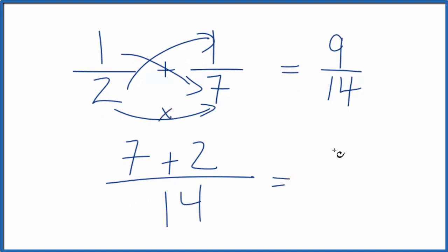Seven plus two, that's nine. And we carry the fourteen over here. Same answer as we got before. One-half plus one-seventh, that equals nine-fourteenths.